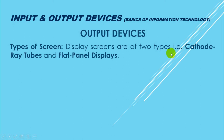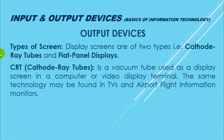Display screens are of two types: cathode ray tubes and flat panel displays. Screen ki display ke lihaz se usko do hisson mein divide kiya gaya hai — uski physical appearance ke lihaz se, ke wo dikhne mein jis lihaz se nazar aate hain. Uske internal structure bhi hum dekhenge. Ek cathode tubes hain aur ek flat panel displays hain. Cathode tubes comparatively kam istemal mein hoti hain; flat panel displays zyada hote hain.